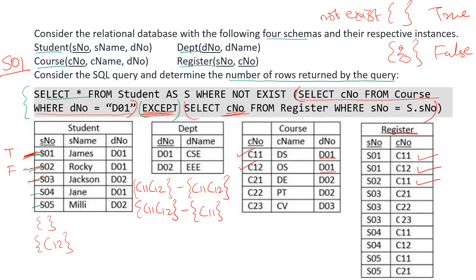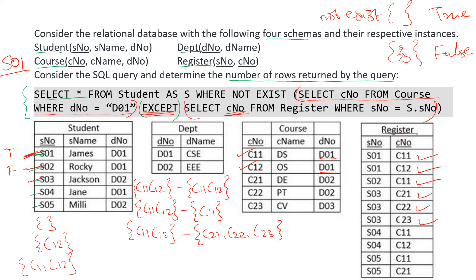Moving on to S03. We have C11, C12 minus the course numbers registered for S03, which are C21, C22, and C23. When we take this set difference the result is C11, C12 itself — still non-empty. So false is returned and S03 is not included.